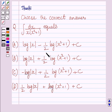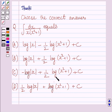The options are: (A) log x minus 1 upon 2 log of x squared plus 1 plus c; (B) log x plus 1 upon 2 log of x squared plus 1 plus c; (C) minus log x plus 1 upon 2 log of x squared plus 1 plus c; (D) 1 upon 2 log x plus log of x squared plus 1 plus c.